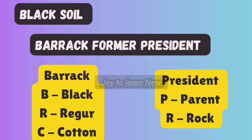The first shortcut is 'Barak'. Here B represents Black Soil, R represents Regur — that is, Black Soil is also known as Regur Soil — and C represents Cotton. That means Black Soil is ideal for the growth of Cotton. Black Soil is also known as Regur Soil and it is ideal for the growth of Cotton.